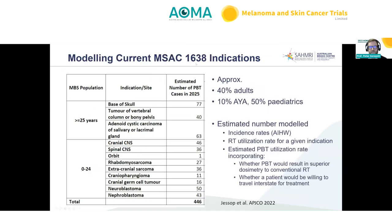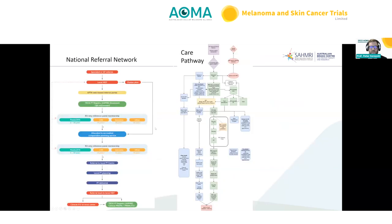Modelling of current MSAC 1638 indications and capacity to deliver care estimated around 450 patients will need to come to Adelaide for proton therapy. This modelling study used Australian incidence rates, a utilisation rate established with international experts, and a PBT utilisation rate for those conditions. There is significant local, national, and international work underway to establish a national referral network for 1638 indications, with the current RANZCO proposed referral network pathway forming part of the overall care pathway.